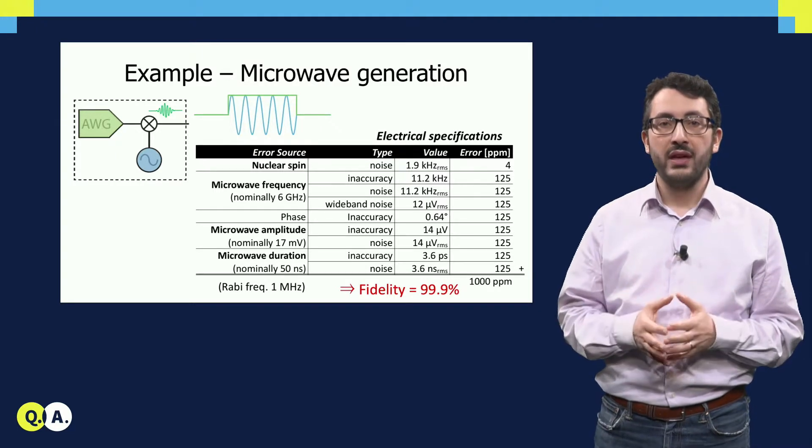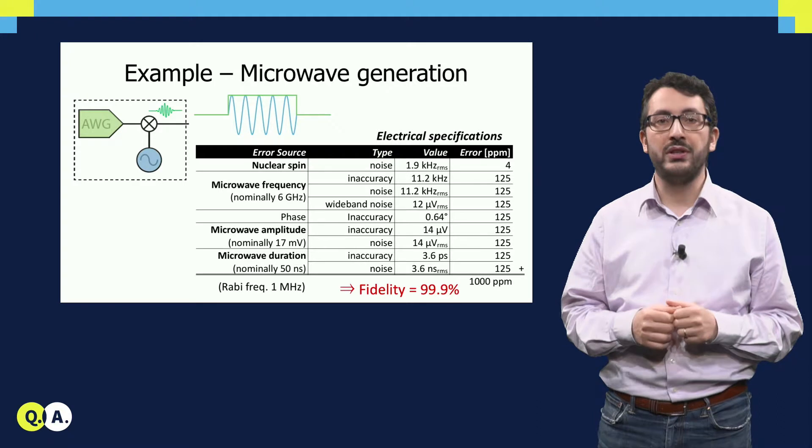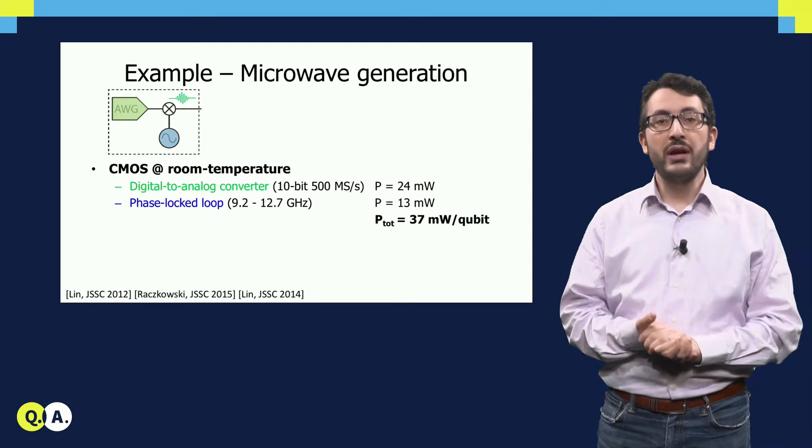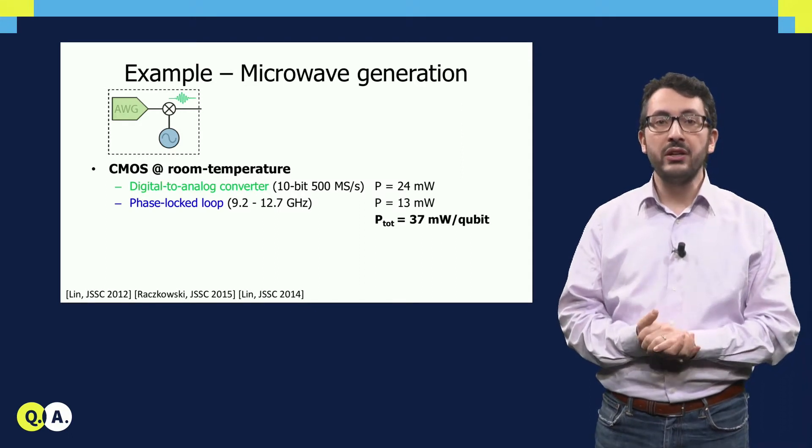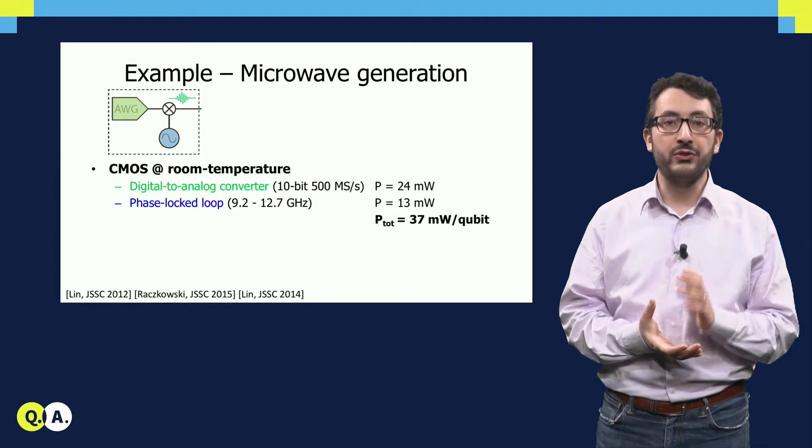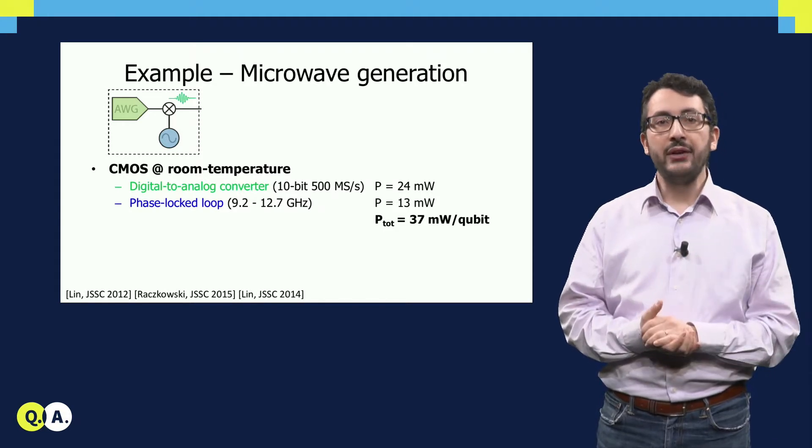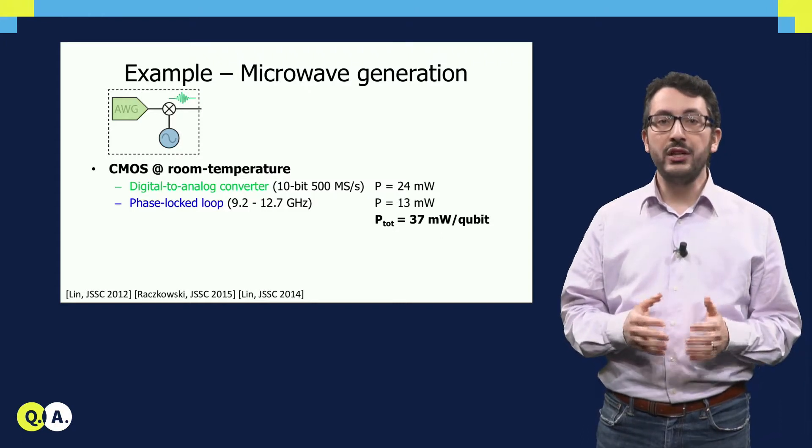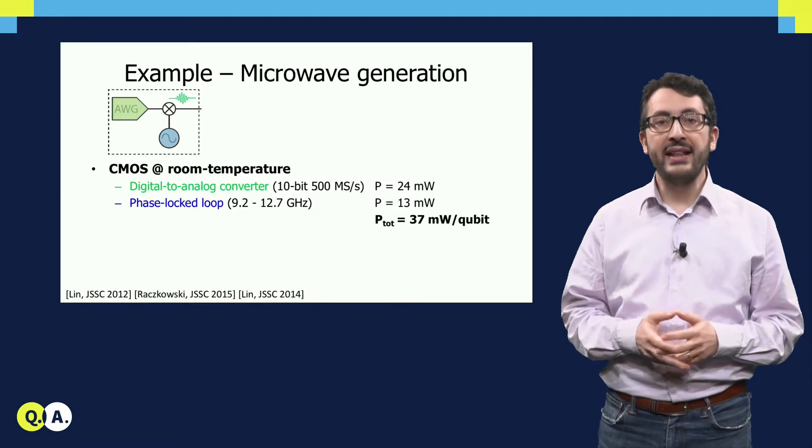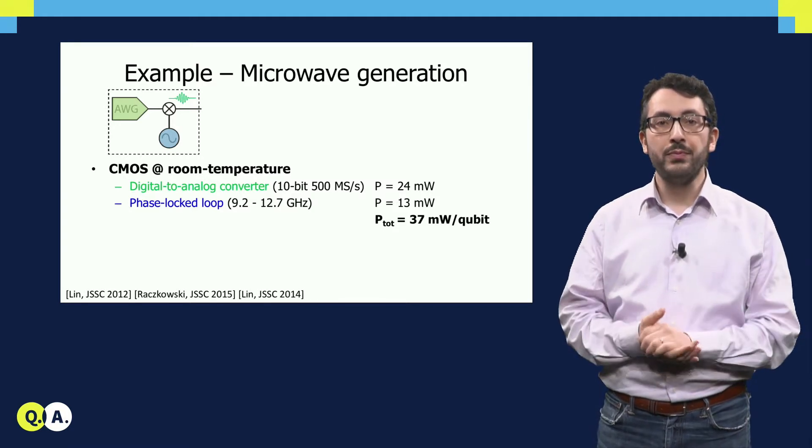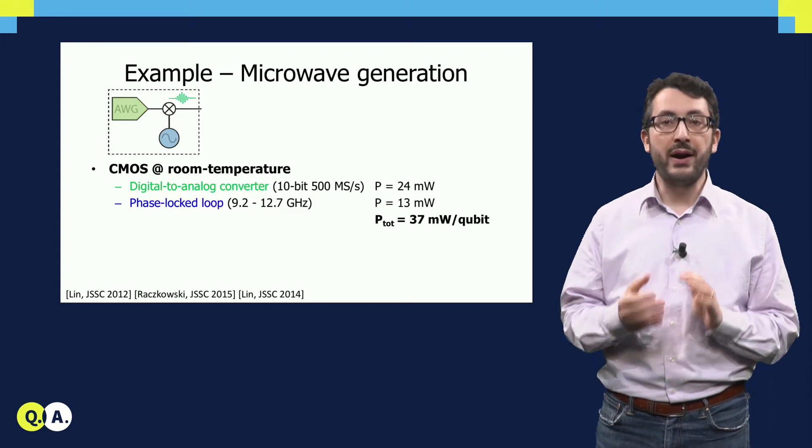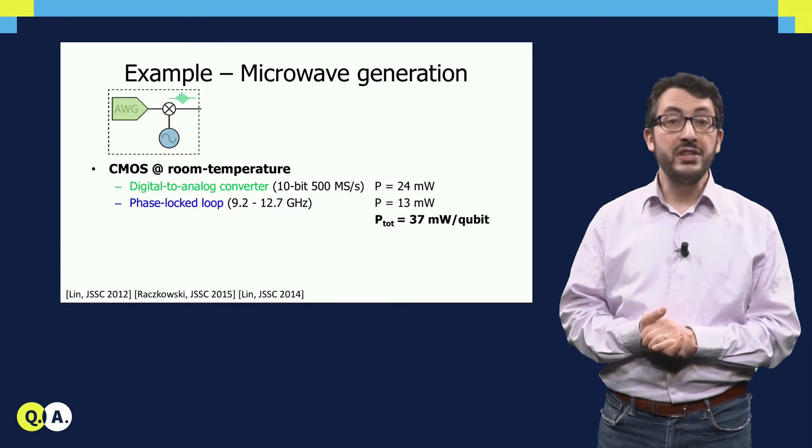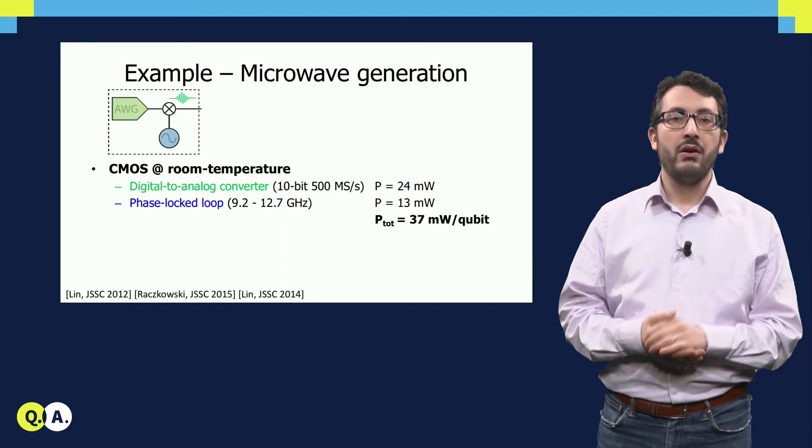The follow-up question is, is it possible to realize a circuit with such specification or not? To give a first response, let's look at what we can do using CMOS technology, but at room temperature, not cryogenic. Here, I took as an example a practical implementation for the green block and the blue block. So we can use a digital to analog converter to implement the green block, and the so-called phase locked loop for the oscillator in blue. By choosing specific parts, we can see that such a system would consume a total power of 37 mW for a single qubit.